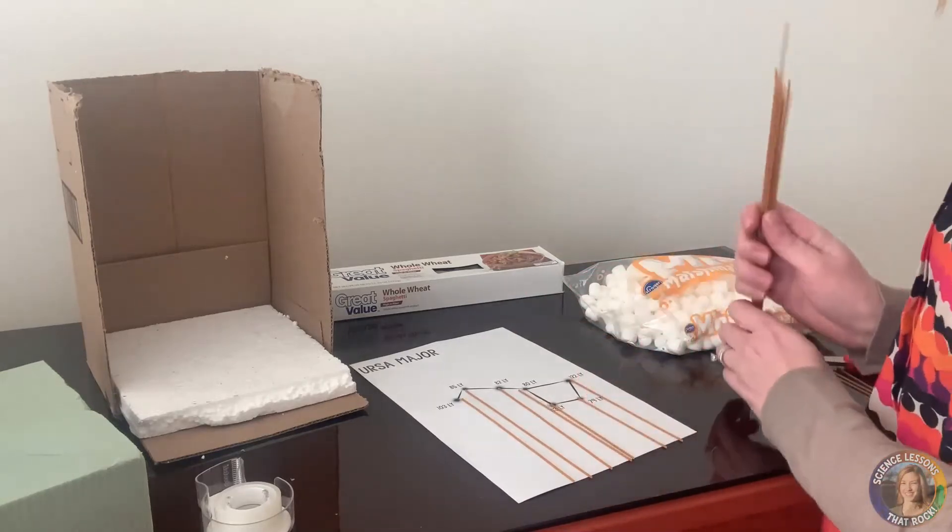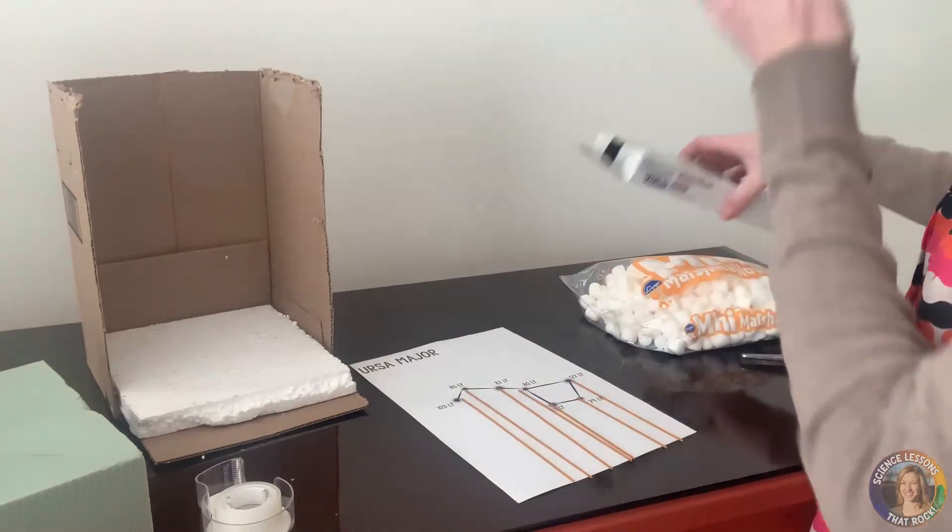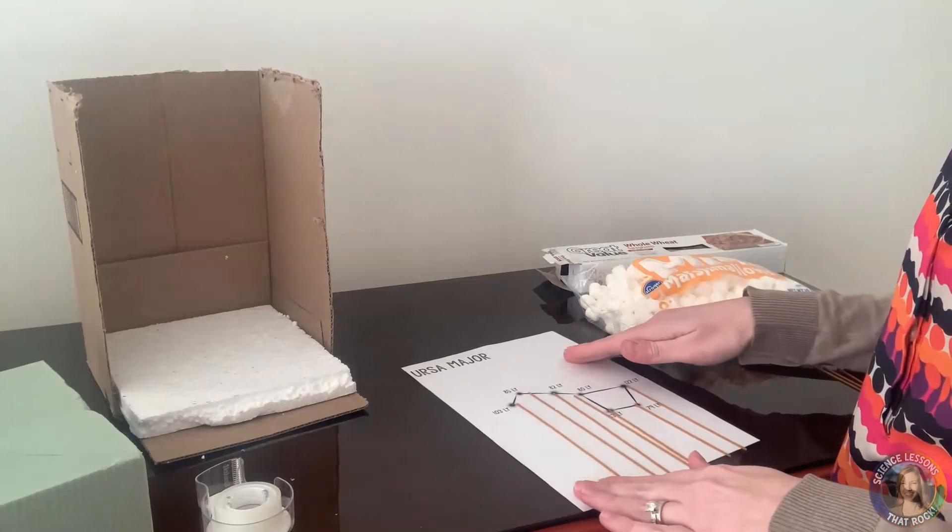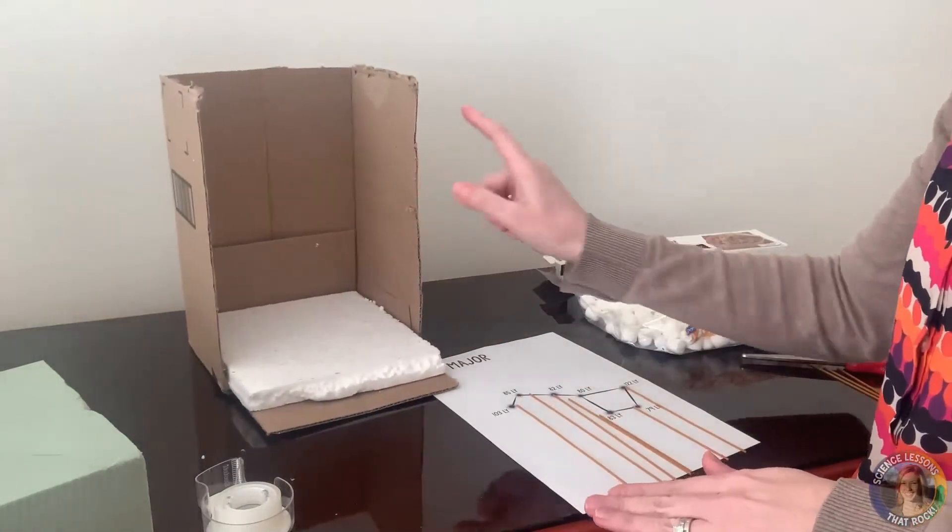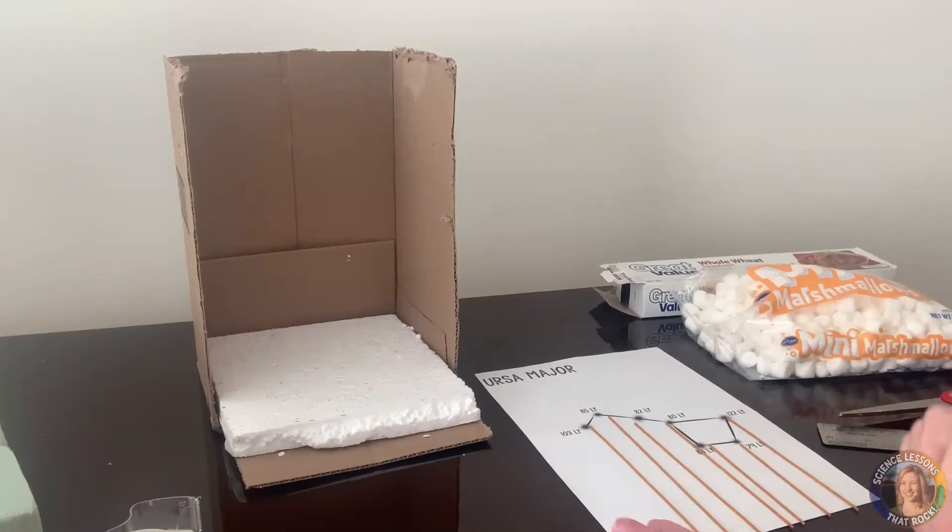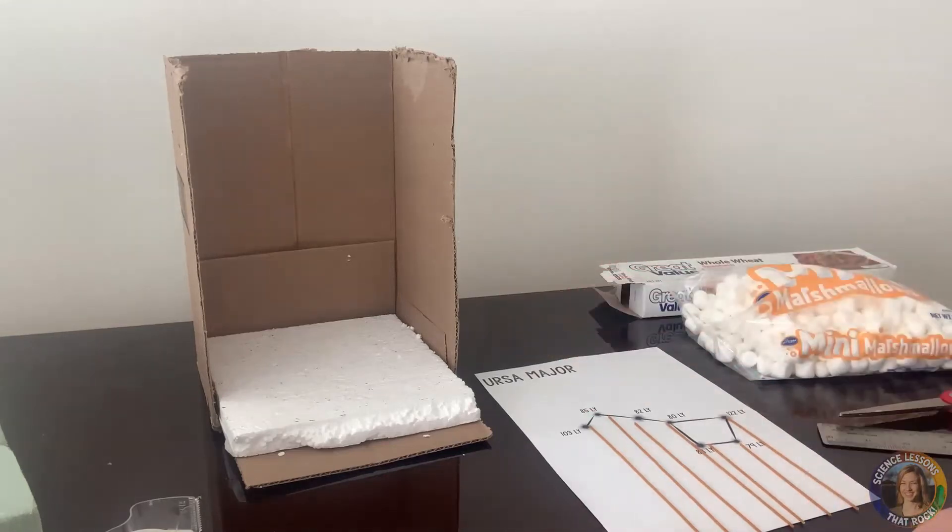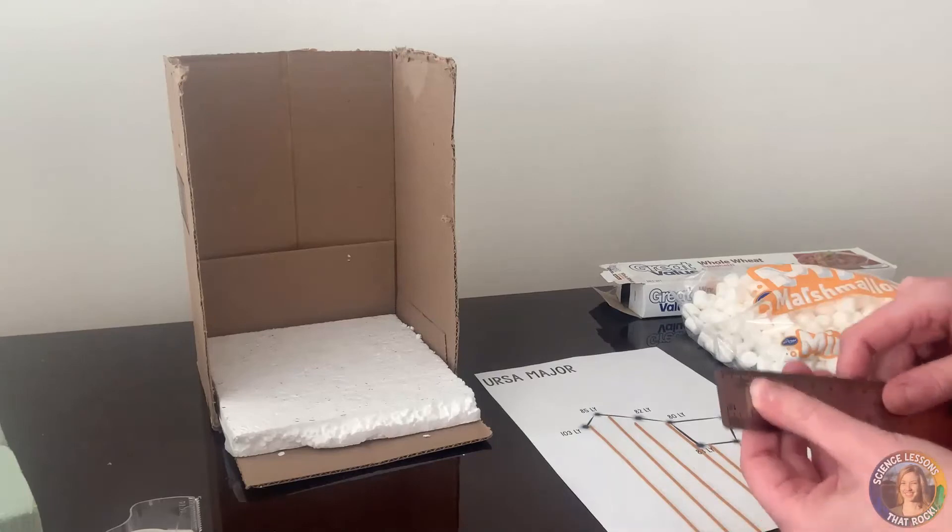So I have my spaghetti and now students are going to need to figure out how far back or how am I going to measure where they're going to go in the styrofoam. If you teach older grades you can probably have the students figure out a mathematical way on their own to figure out the measurements using dimensional analysis. For younger grades I would just tell the students how to do it. So I would say that for every one centimeter it's going to represent 10 light years.